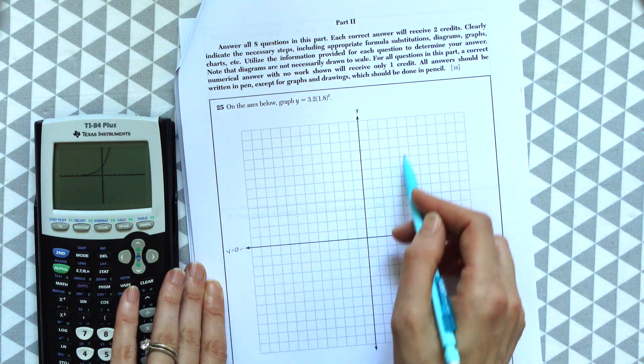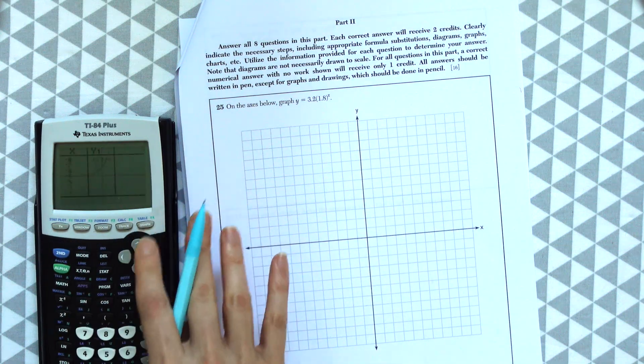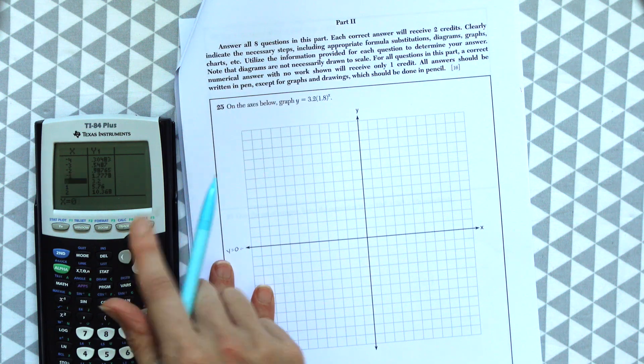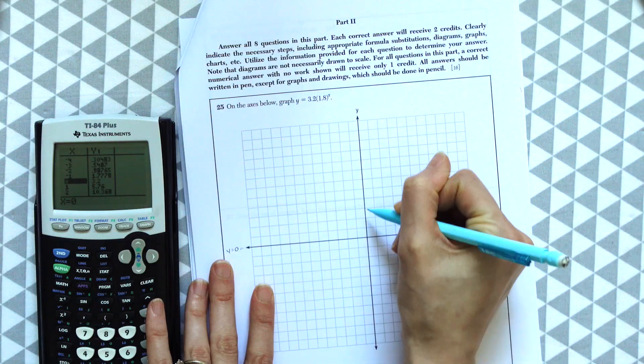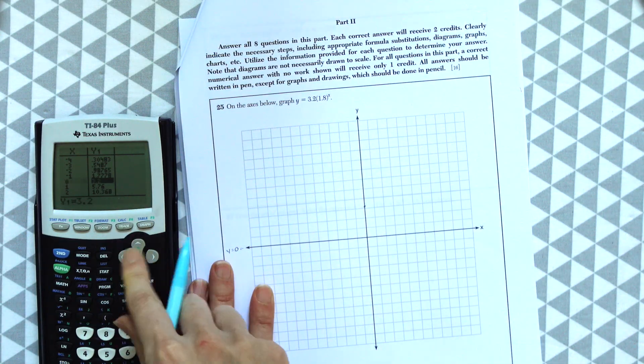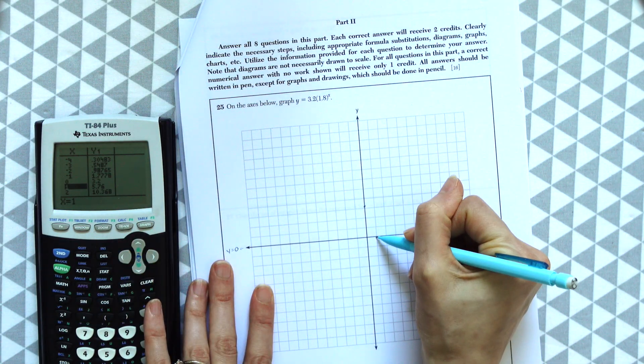So this line is going to go closer, closer to 0, but never actually hit it. And then this is going to go up. So when we look at this table, let's start. Let's look at 0, 3.2. So we have 0 and it goes up to 3.2. 1 is 5.76.